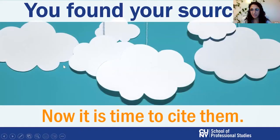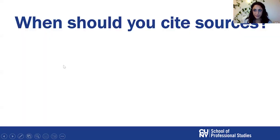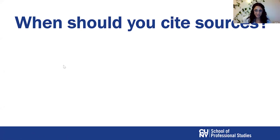As Miranda explained, the best way to avoid plagiarism is to cite. Now we're going to talk about when to cite and how exactly it should look like. Citations are the specific information that you provide as a reader so I can know exactly where your information came from.